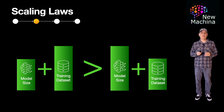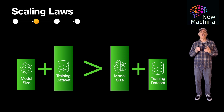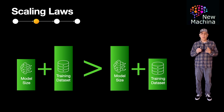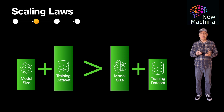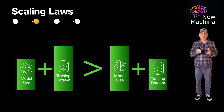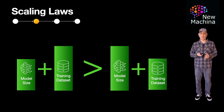Another observation with LLM scaling laws is in the area of the LLM's ability to generalize. Larger models trained with more data tend to generalize better and achieve higher performance on downstream tasks with fewer examples.